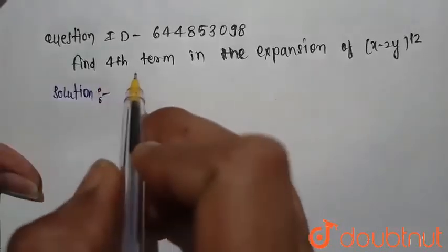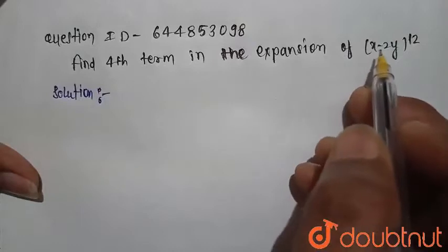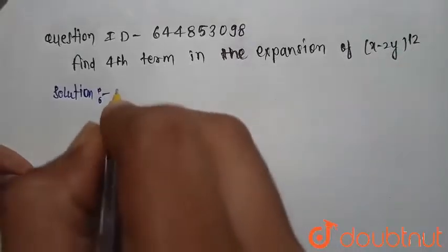Find the fourth term in the expansion of (x minus 2y) raised to power 12.